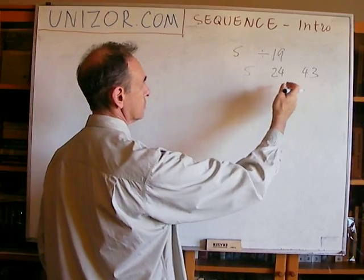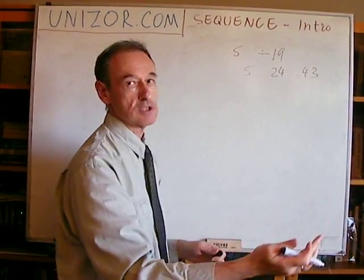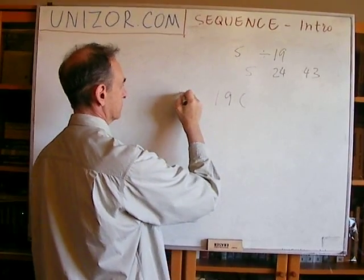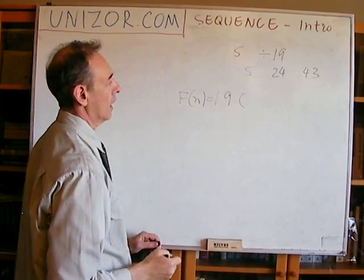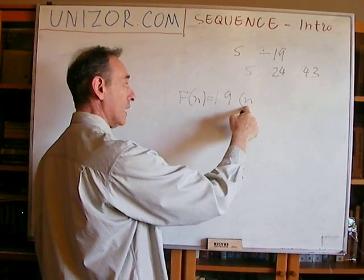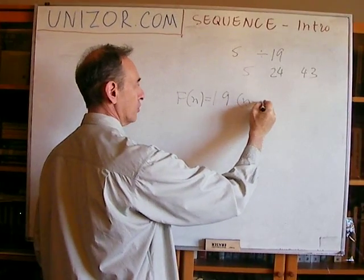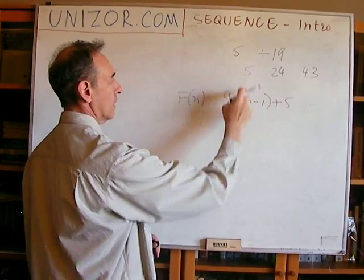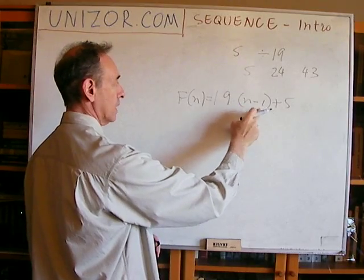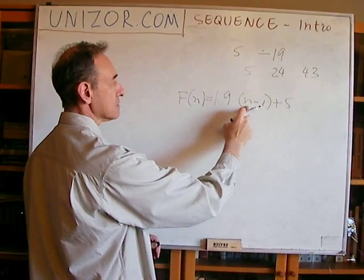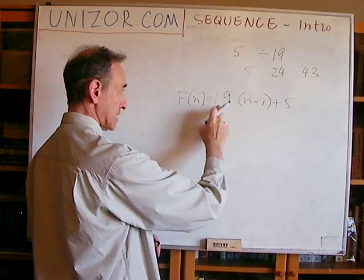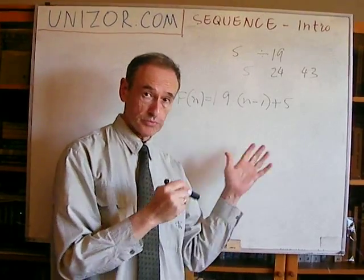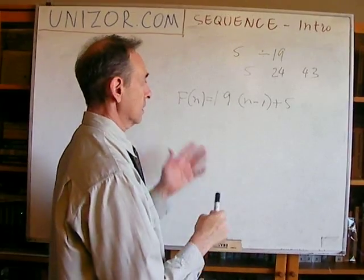Well, how to get five, then 24, then 43? The difference between them is 19, so most likely the formula contains 19 times something. If I put n minus one, then for n equals one I have 19 times zero plus five, which is five. For n equals two, I have two minus one is one times 19, which is 19 plus 5 equals 24. For n equals three, I have two times 19 equals 38 plus five equals 43. So this is the general formula: 19(n−1) + 5. Again, this is not a proof — to prove it you'd do it by induction — but it's obviously the case.